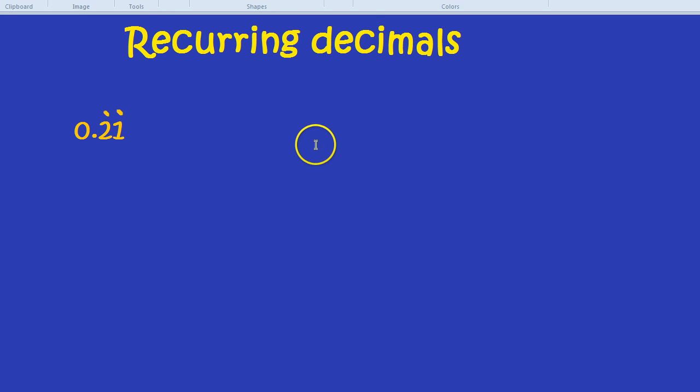How would we convert that into a fraction? First of all, let's write out the number. So we have 0.21 carrying on forever. And what we do, here's the key step. We call this expression x or any letter, anything we want. We can call it button or rabbit, but let's just give it a letter. Let's call it x. There it is. So that expression is x. Now bear with me because this method gets a little bit interesting.